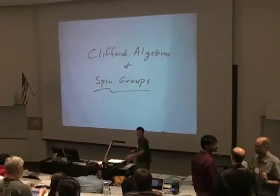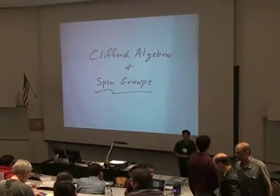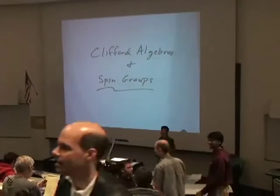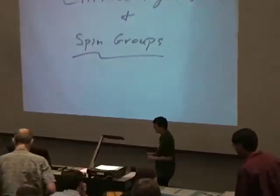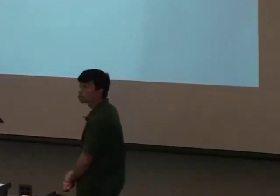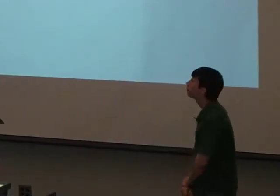Welcome back to yet another installment of Quadratic Forms and Automorphic Forms. Today I'd like to talk about Clifford Algebras, which we've already seen appear several times in Professor Paramalla's talk — there they appear in terms of Galois homological invariants of quadratic forms. Here I'd like to take a closer look at them and try to use them to construct spin groups, which are double covers of the orthogonal group and are very useful in the theory of quadratic forms.